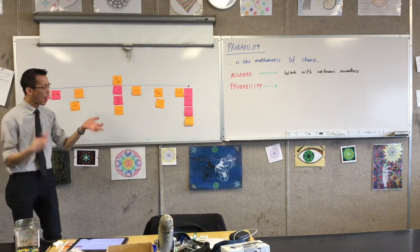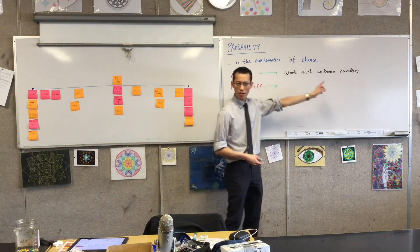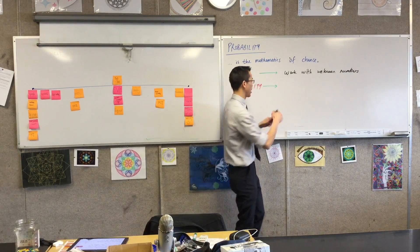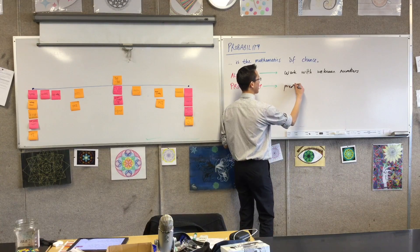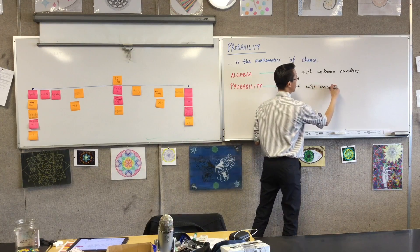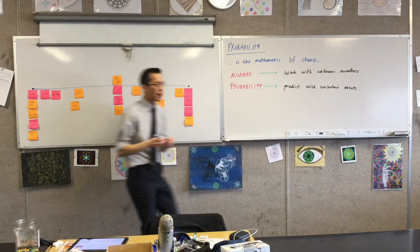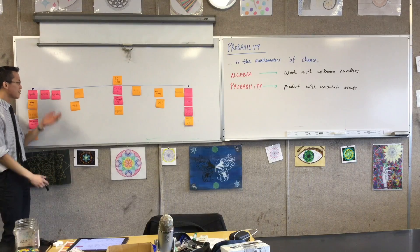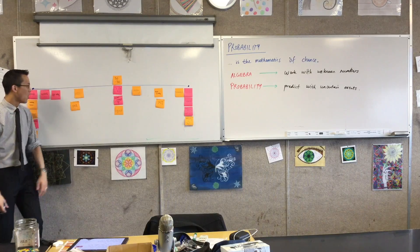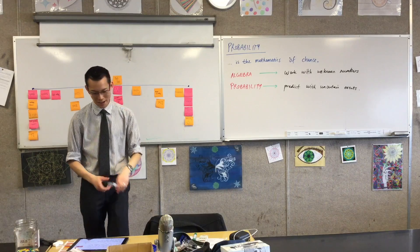And probability is kind of in the same sort of vein. But instead of working with unknown numbers, just a little more specifically, it's about predicting when you've got uncertain events. So you might say, oh, there's something and you know, it's an even chance that it will happen. Or it's pretty unlikely, or it's, you know, turts my goals, whatever you like.